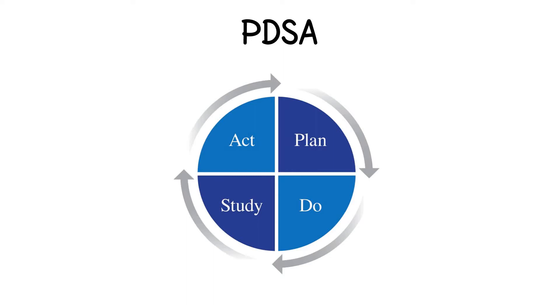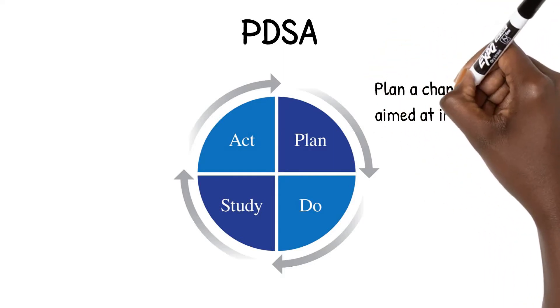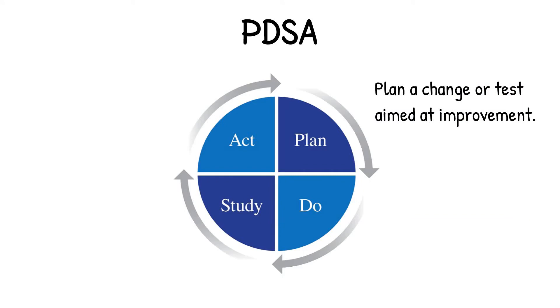In the planning stage, you establish an objective, which includes what you are trying to accomplish and your project goals. In this stage, you also come up with interventions or change ideas to improve the process and hypothesize about the results. You will also create an implementation plan that details the tasks, responsible party, and timeline for completion of each task.